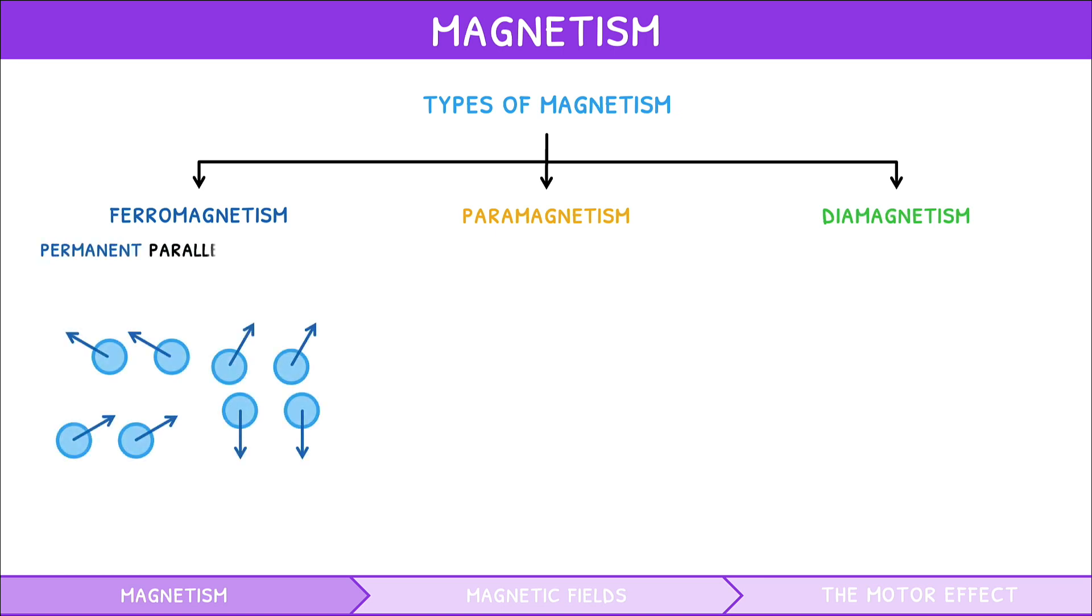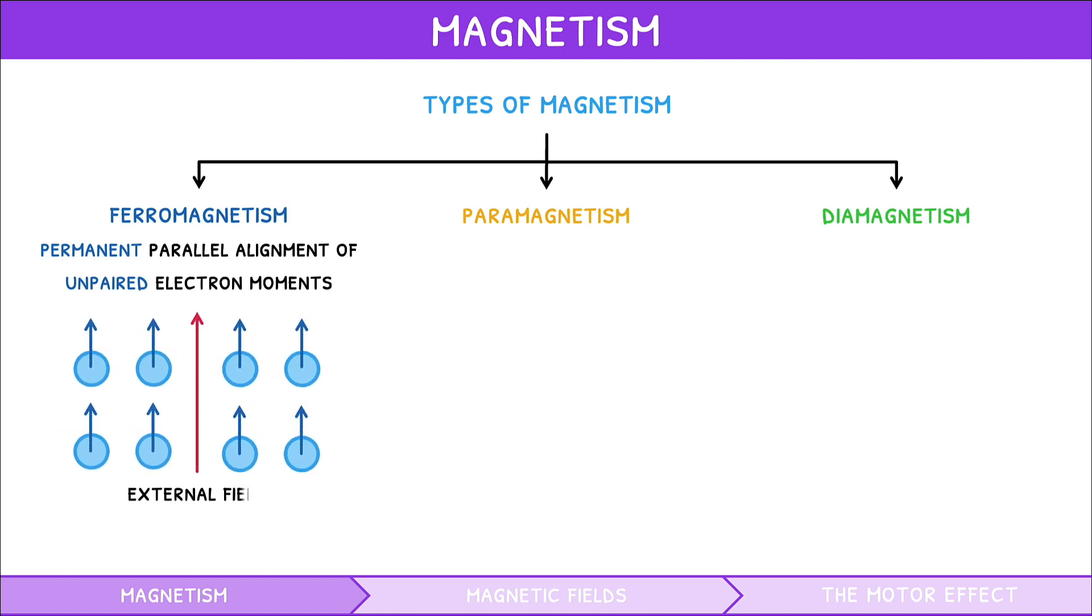Ferromagnetism is the permanent parallel alignment of unpaired electron magnetic moments by an external magnetic field. Common elements that have this are iron, cobalt, and nickel.